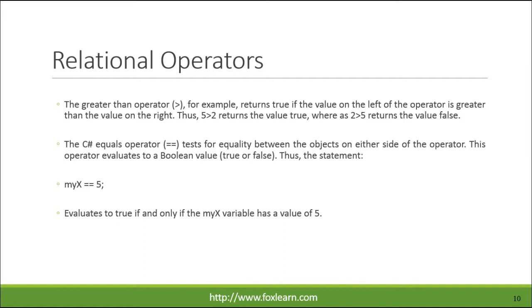The greater-than operator, for example, returns true if the value on the left of the operator is greater than the value on the right. Thus, 5 > 2 returns true, whereas 2 > 5 returns false. The C# equals operator (==) tests for equality between the objects on either side of the operator. This operator evaluates to a boolean value — true or false — and evaluates to true if and only if the variable has a value of 5.